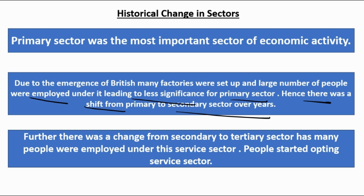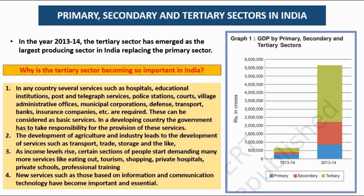As British companies and industries grew, people moved from the primary sector to the secondary sector for better income. Further, there was a change from secondary to tertiary as many people got employed in the service sector. Today people choose to become teachers, doctors, or engineers — all tertiary sector jobs. So first it was primary, then a shift to secondary, and finally a shift to tertiary.